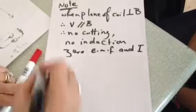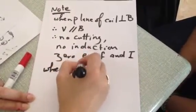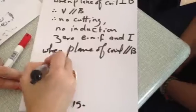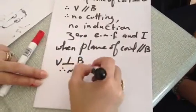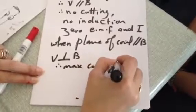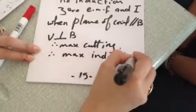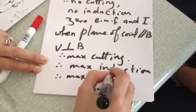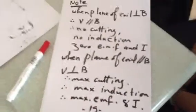Vice versa, when the plane of coil parallel to B, there is a maximum cutting, maximum induction, maximum EMF, and current. This is clear? Yes. Very important. Okay?